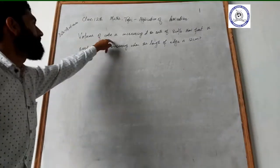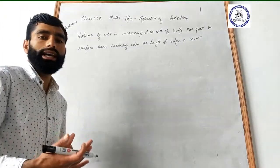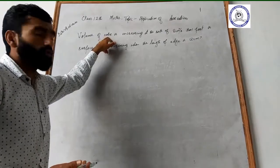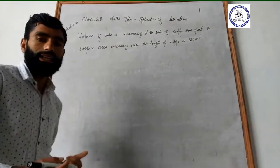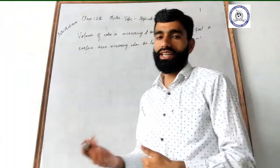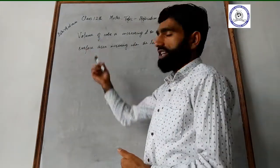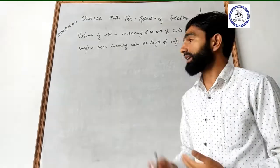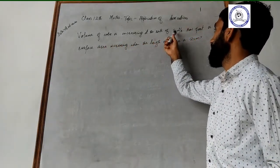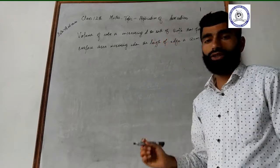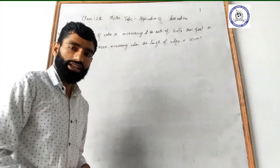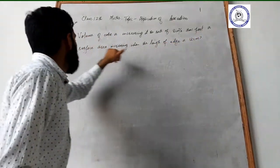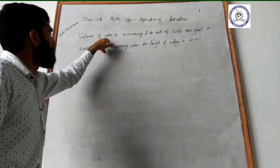Our question is: the volume of a cube is increasing. The volume of cube is increasing at the rate of 8 cm³ per second. How fast is the surface area increasing?